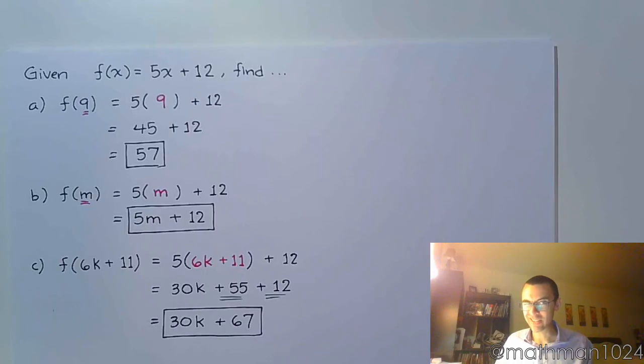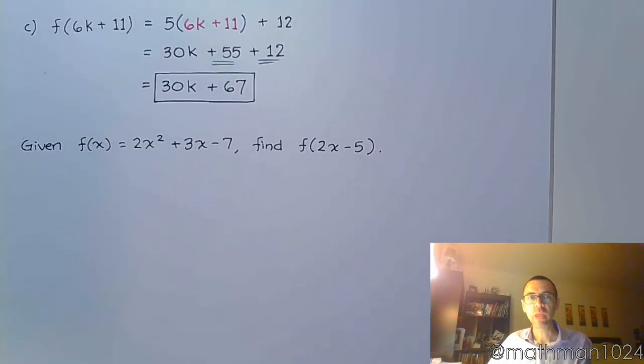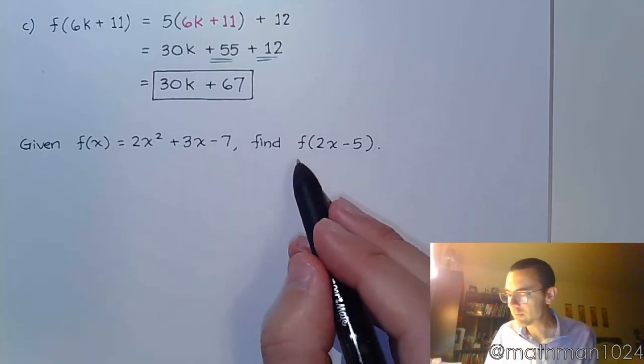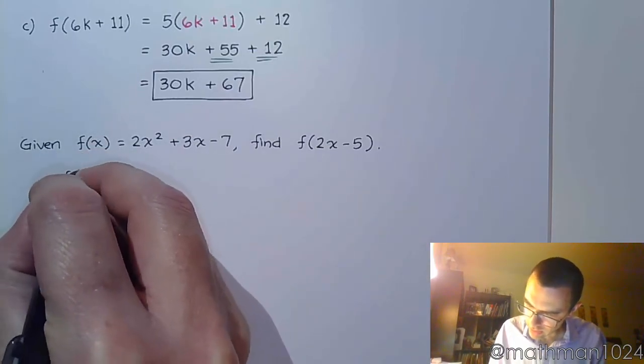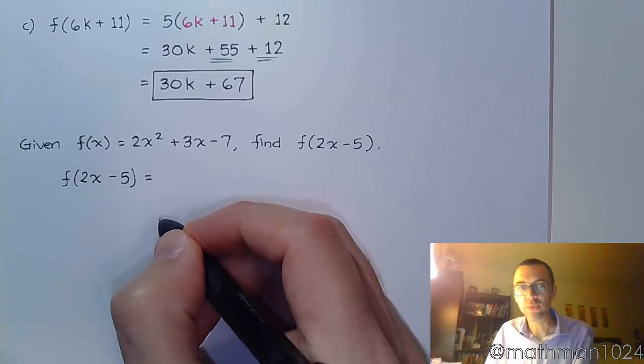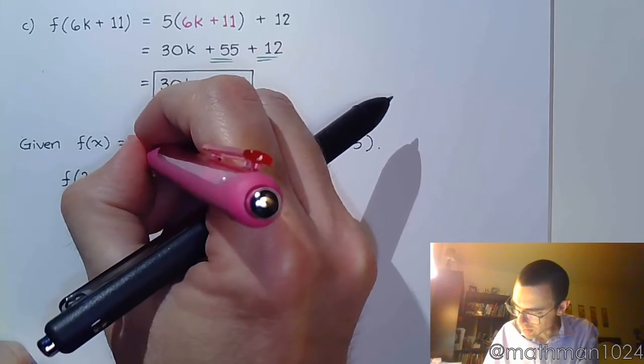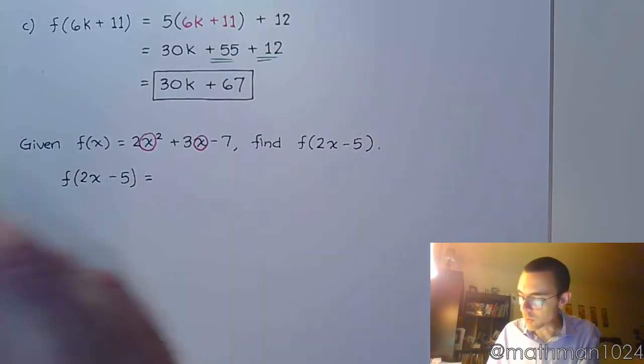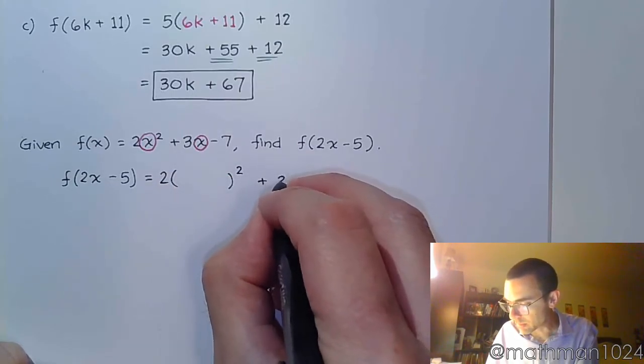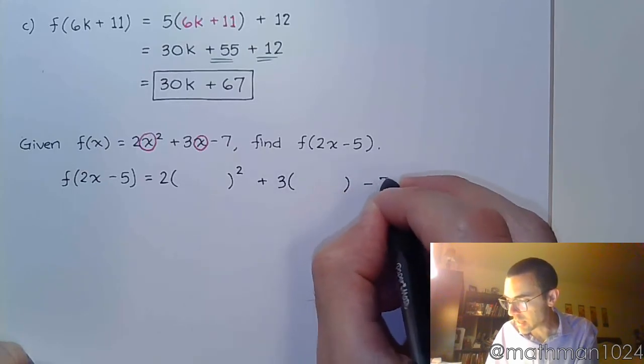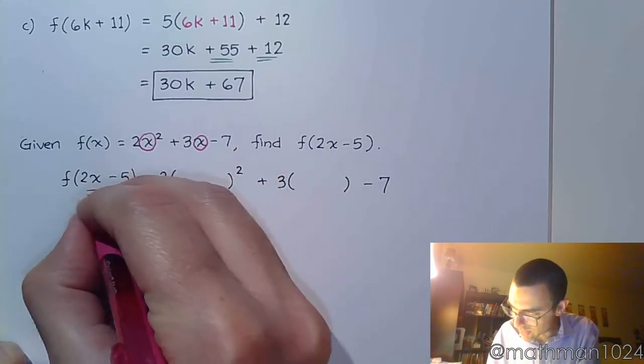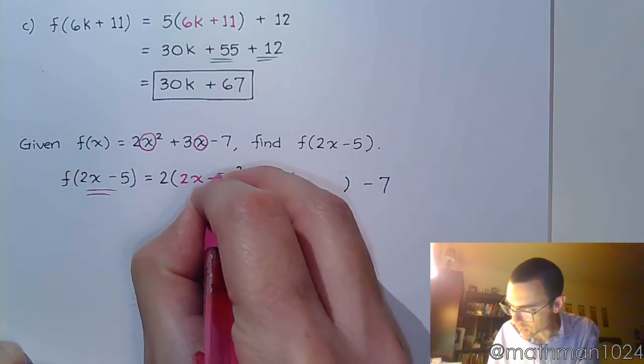Now let's take a look at this next example. So if I give you f of x equals 2x squared plus 3x minus 7, find f of 2x minus 5. So in order for us to find f of 2x minus 5, just as we've seen previously, we're going to take all of these places where I see x and I'm going to replace those with parentheses. Make sure that you keep in mind there's a square plus 3 times parentheses and minus 7. And inside these parentheses, you're going to plug in this input. So we replace the x's with 2x minus 5.